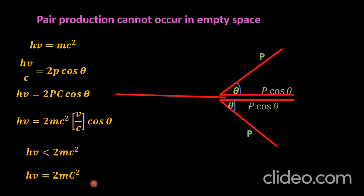But conservation of energy requires Hν equals 2mc², so it is impossible for pair production to conserve both energy and momentum unless some other object is involved to carry away part of the initial photon momentum. Therefore, the presence of a nucleus is necessary for pair production to occur, as the nucleus carries away the initial photon momentum, which is necessary for the conservation of energy and momentum.